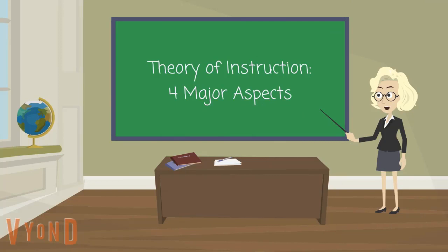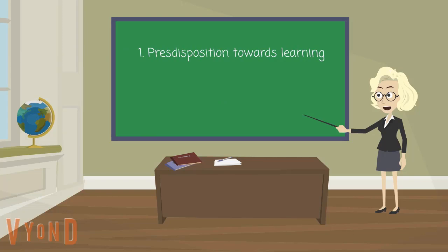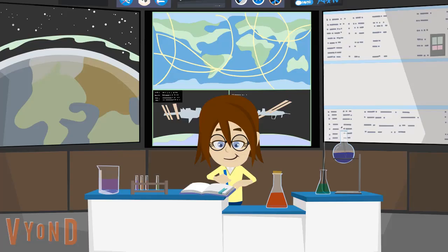Bruner states that the theory of instruction should address four major aspects. First, predisposition towards learning.